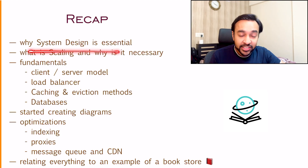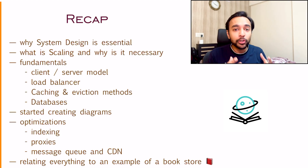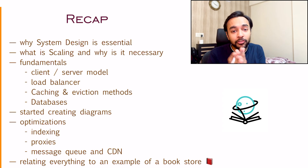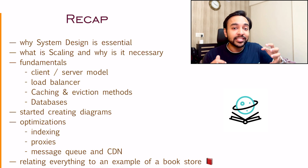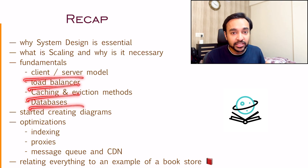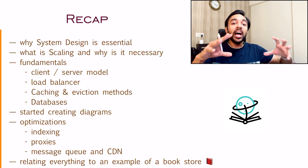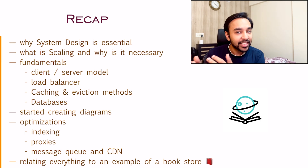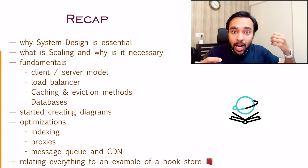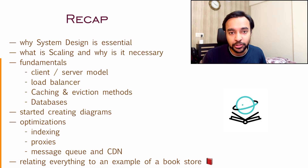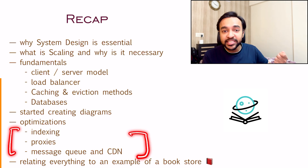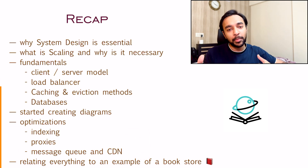We have understood why system design is essential and where you will find it in your career path. We have also discussed horizontal scaling and vertical scaling. After that, we started discussing all of the components like the client-server model, load balancer, caching, databases, and you learned how you can connect all of them and start creating diagrams. Once you have arrived there, it is now time to optimize your design, and that is where additional components like indexing, proxies, message queues, and CDNs all come in handy.